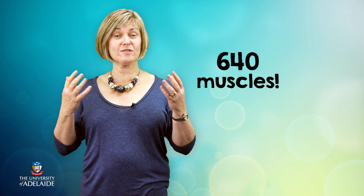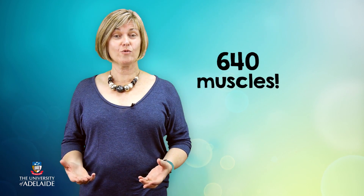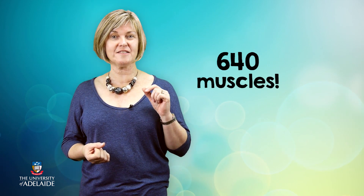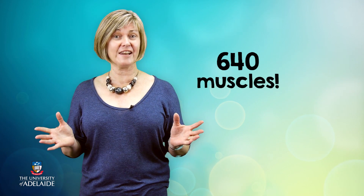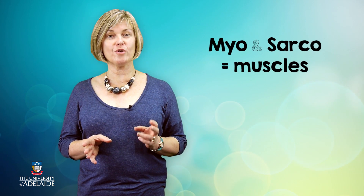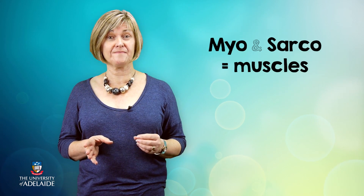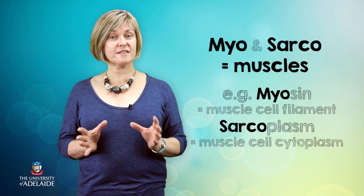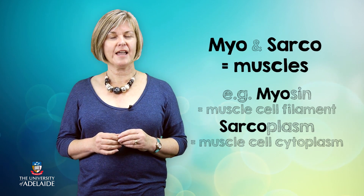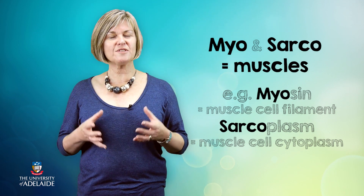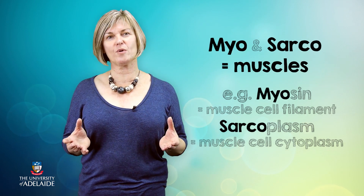There are around 640 muscles found all over our body, ranging in size from the tiny ones which open and close the pupils in our eyes, right through to the large ones found in our legs that keep us moving. The terms myo and sarco are commonly used prefixes when talking about muscle features, such as myosin or sarcoplasm. Sarco means flesh, and muscles essentially make up all the fleshy parts of our bodies.